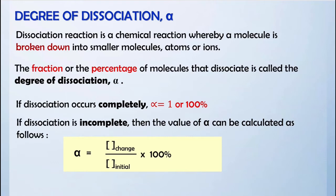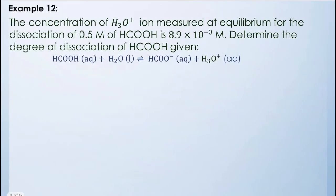Let's look at Example 12. From the question, we extract all the given information: the initial concentration of HCOOH is 0.5 M, and the concentration of H₃O⁺ at equilibrium is 8.9 × 10⁻³ M. You are asked to determine the degree of dissociation of HCOOH.